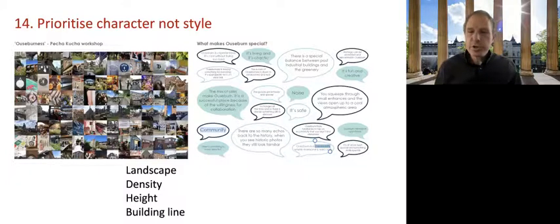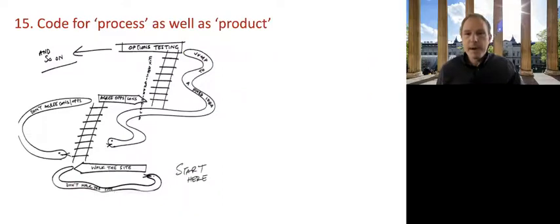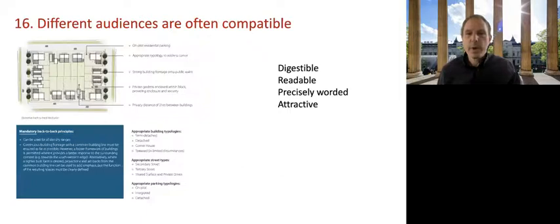Next, two issues that we can deal with very quickly, first it's possible to code for desirable and rigorous design process, as well as for desirable design product, for example, requirements that give development managers the confidence to ask that sites should be subject to character analysis and community engagement. And second audiences benefit from digestible, readable, precisely worded and attractive design codes, whilst containing enough detail to support decision making without being needlessly bulked out with superfluous material.